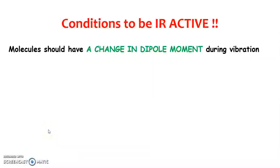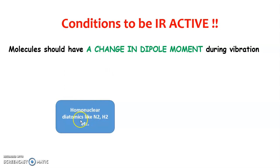There is also a condition for a molecule to be IR active. The vibration of a molecule can interact with radiation only if the molecular vibration involves a change in dipole moment. Molecules must have a change in dipole moment during vibration to be IR active. Hence homonuclear diatomic molecules like nitrogen and hydrogen, which do not possess a dipole moment even during vibration, will not give an IR spectrum. Heteronuclear molecules and molecules capable of unsymmetric vibrations can be IR active.